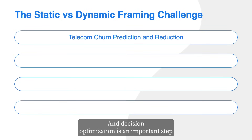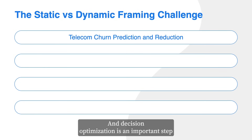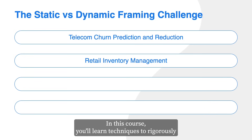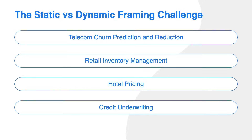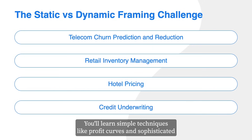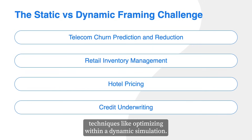Decision optimization is an important step almost everywhere that machine learning is used. In this course, you'll learn techniques to rigorously optimize decisions based on your ML models. You'll learn several techniques like profit curves and sophisticated techniques like optimizing within a dynamic simulation.